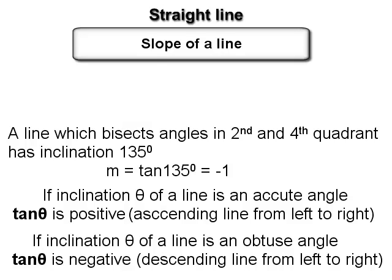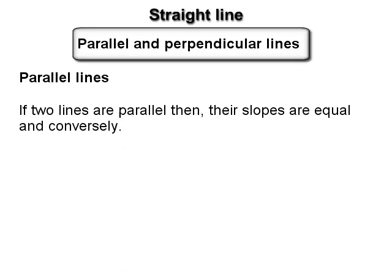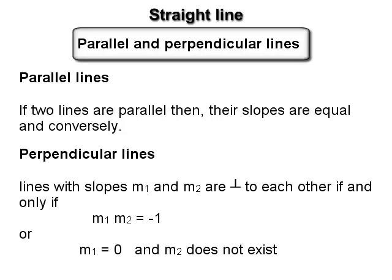Parallel and perpendicular lines: (1) If two lines are parallel, then their slopes are equal, and conversely. (2) Two lines with slopes m₁ and m₂ are perpendicular to each other if and only if m₁·m₂ = −1, or m₁ = 0 and m₂ does not exist.